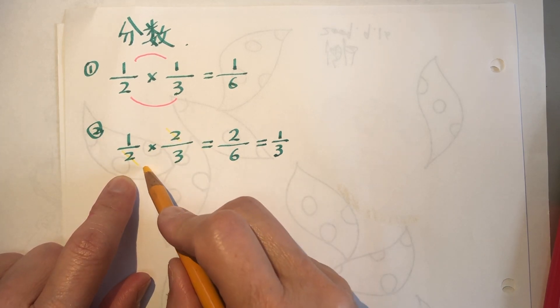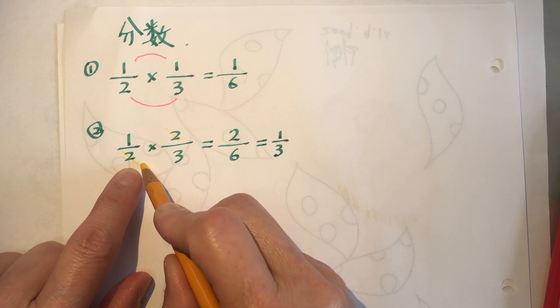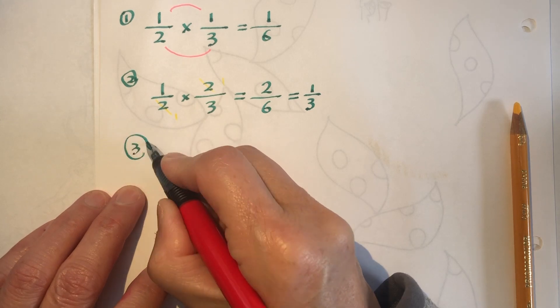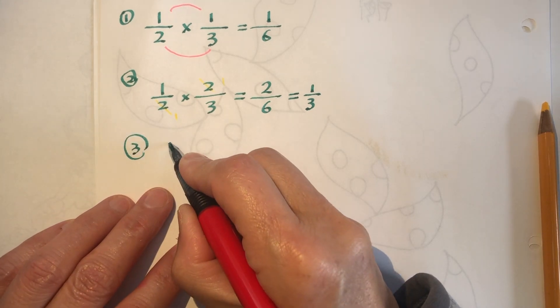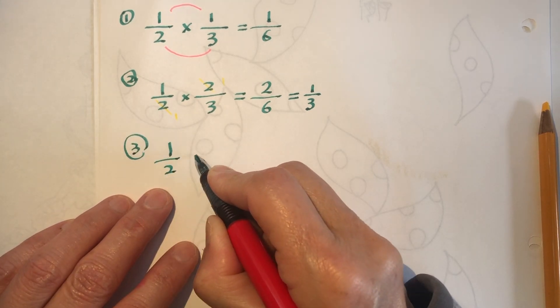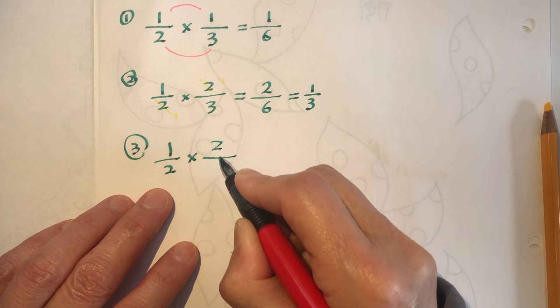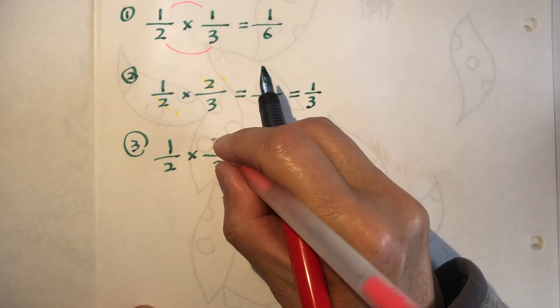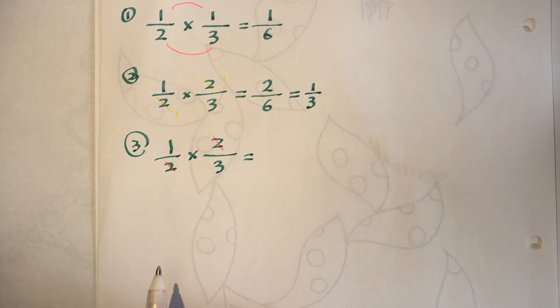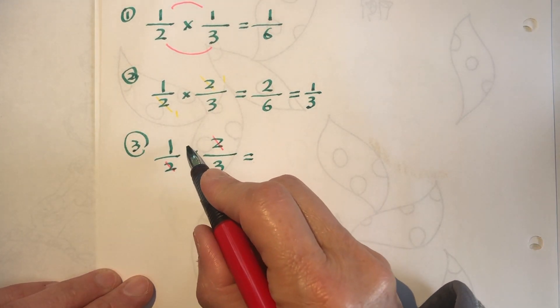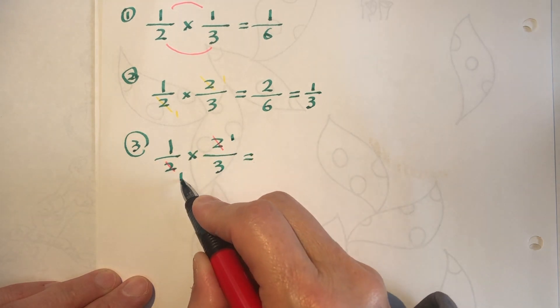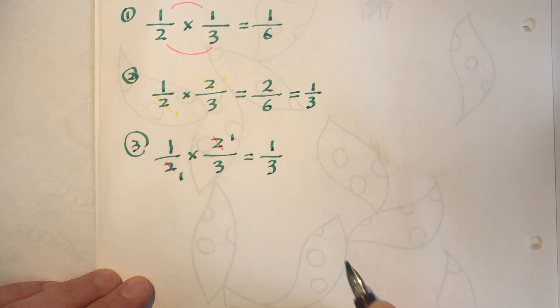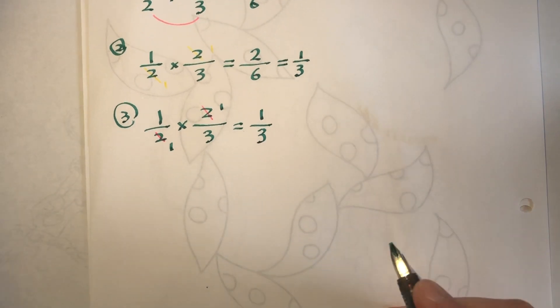So we can simplify, both divided by 2. This is 1, this is 1. So, the same problem, now we say it's third problem: 1 over 2 times 2 over 3 equal to. Now we simplify it, cross-cancel. 2 and 2 can be cross-canceled. It becomes 1 times 1 and 1 times 3. So 1 over 3, right? This is much simpler.